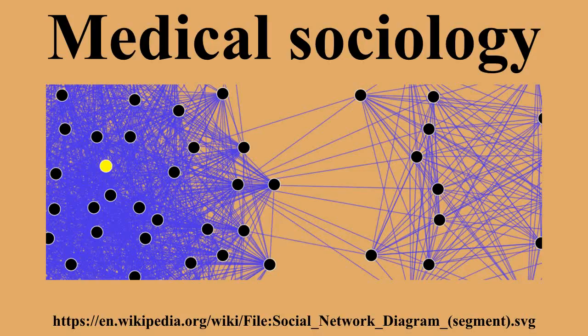By the early 1970s, the medical sociology section of the British Sociological Association had established its own organizational footprint, and in 1979 published its own medical sociology journal.